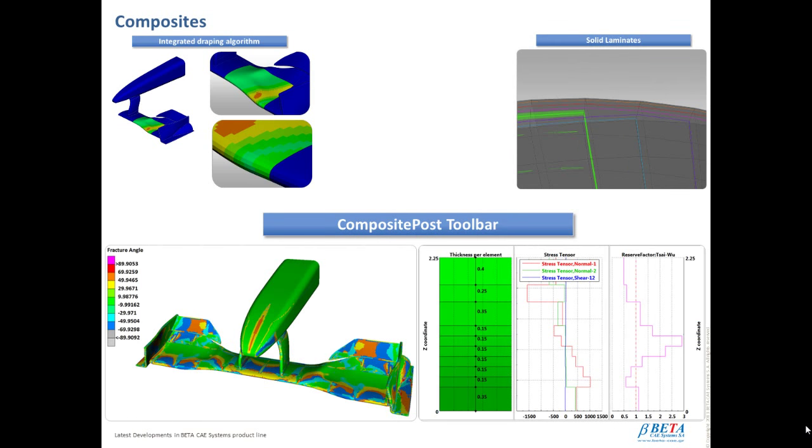The solver results from the analysis of products made of composite materials can be processed by META post-processor for evaluation, report generation, and decision-making towards the design improvement. In order to accommodate the requirements of the analysis of these results, META offers the Composite Post Toolbar, a set of integrated specialized functionalities collected into a single user interface. So, with META post Composite Post Toolbar, it is possible to process various failure criteria, identify the layer with the max failure, as well as the critical direction. It is also possible to isolate failed elements, plot results through thickness, and re-evaluate the failure criteria by modifying the material limits.